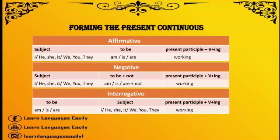To make present continuous questions, we can use subject-auxiliary inversion. This means that we swap around the positions of the auxiliary verb and the subject. So let's make interrogative sentences: Am I working now? Is he working now? Is she working now? Is it working now? Are we working now? Are you working now? Are they working now?